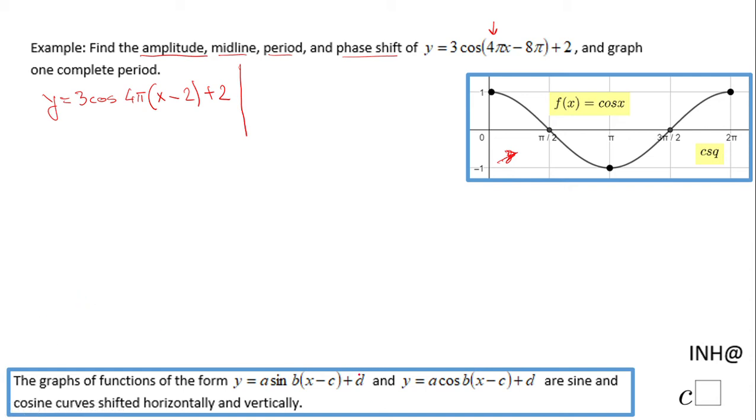We can look at the information we need. The amplitude, a, is 3. The period will be 2π over b, and b is the number in front of the parenthesis, so in our case it's 4π. That's 2π over 4π, which can be simplified as 1/2 or 0.5. That tells me this period is very small, 0.5.